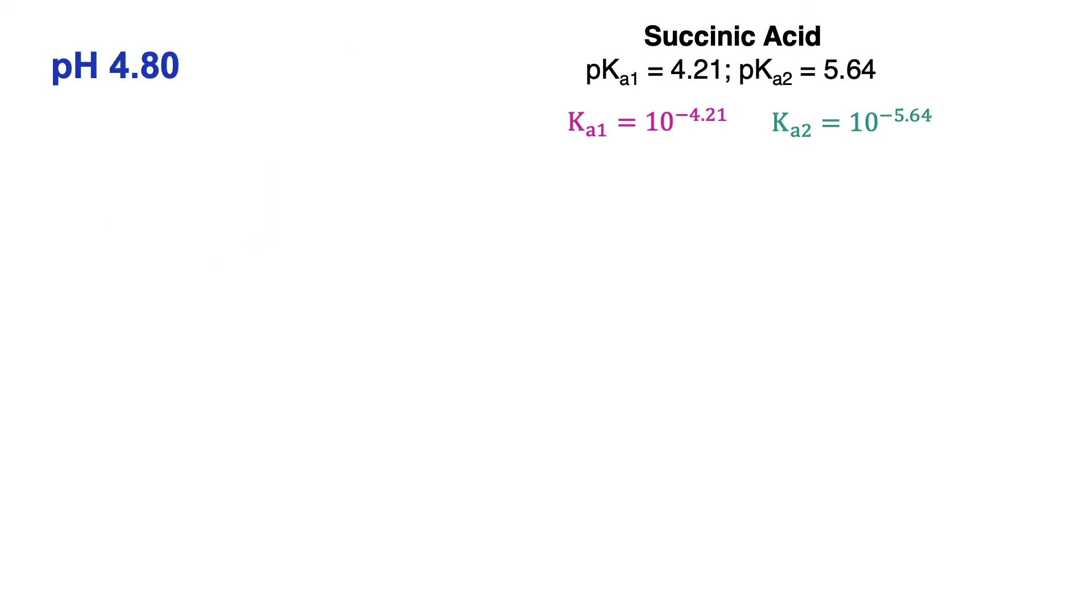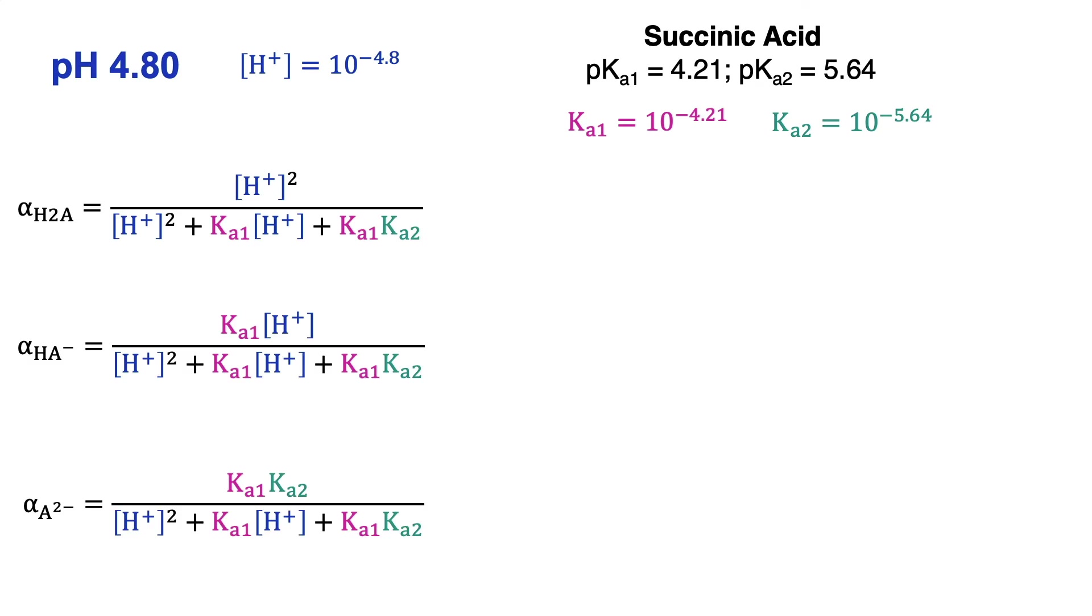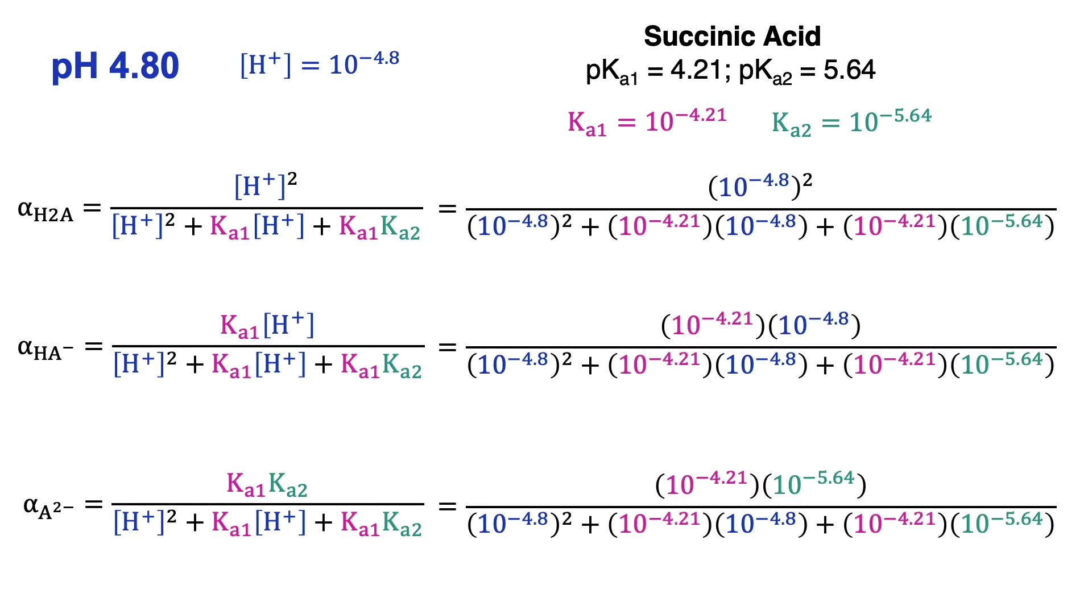Let's see how this changes if we adjust the pH of the solution to 4.8. Under these conditions, our H-plus concentration will be 10 to the minus 4.8. We still have the same Ka values, of course. So let's plug this info into our fractional composition expressions. I put too many sig figs on these, but I'm pretty sure someone would have squawked about them not adding up to 1 if I didn't. That's because of rounding. Technically, I should report these as 0.18, 0.71, and 0.1. As you can see, changing the pH to 4.8 means we mostly have the HA-minus form, but we still have a reasonable amount of the other two species.